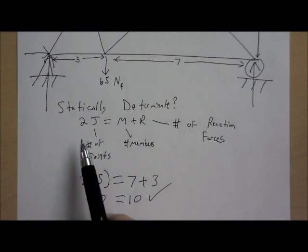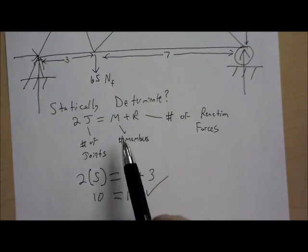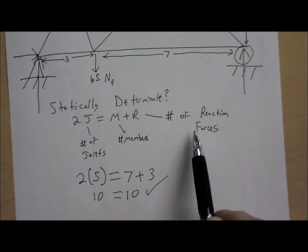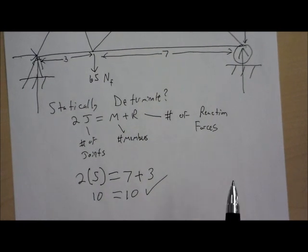So again, 2j equals m plus r. We have five joints, seven members, three reaction forces. 2 times 5 is 10. 7 plus 3 is 10. It can be solved.